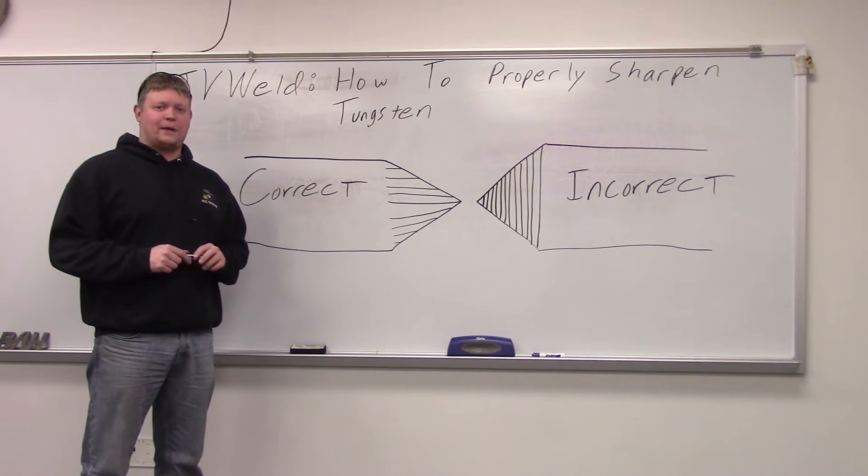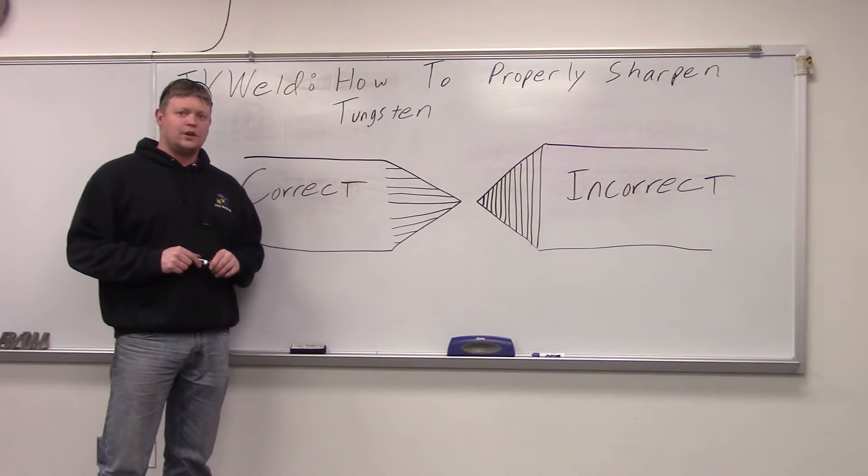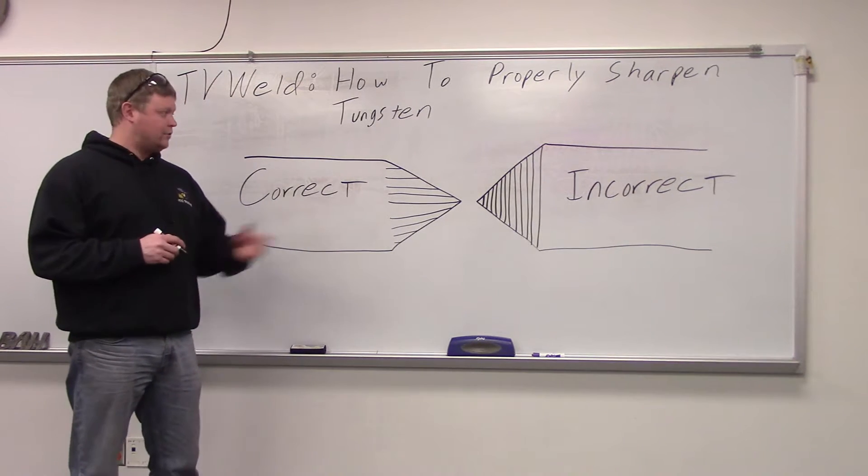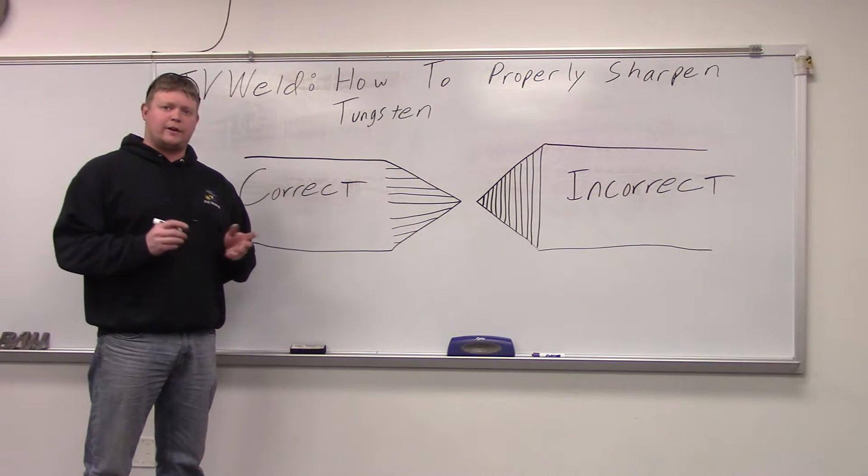All right, what we're going over today is how to properly grind tungsten. There are three endpoints when you're TIG welding that you can use. One is tapered to a point, that's what this is right here. Another is tapered with a ball, and the other one is just a straight-up ball that you would use for aluminum applications.